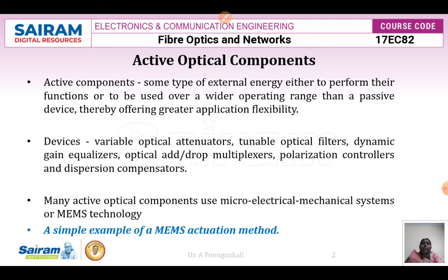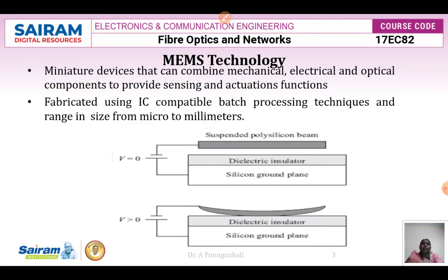Many active optical components use MEMS technology. MEMS technology consists of miniature devices which are a combination of mechanical, electrical, and optical components, providing sensing and actuation functions. These devices are fabricated using IC-compatible batch processing techniques, and the size ranges from micro to millimeters.